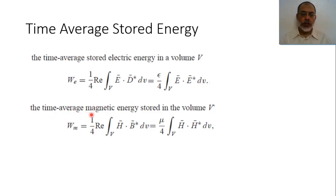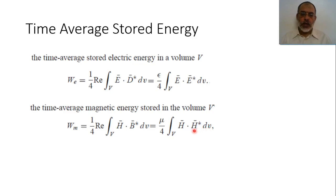In a similar way, the time-average magnetic energy stored in volume V, W_M, is 1/4 times the real part of the integration of H dot B conjugate dV. Because the magnetic flux density is related to the magnetic field as B = mu·H, the stored magnetic energy would be (mu/4) times the integral over the volume of H dot H conjugate dV, which is (mu/4) times the modulus of H squared. This is the time-average stored energy.